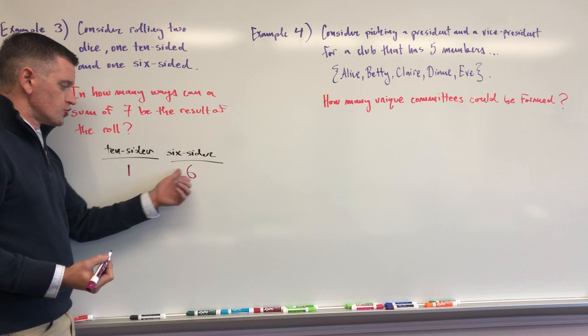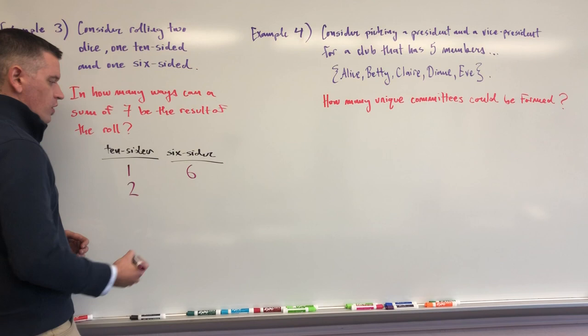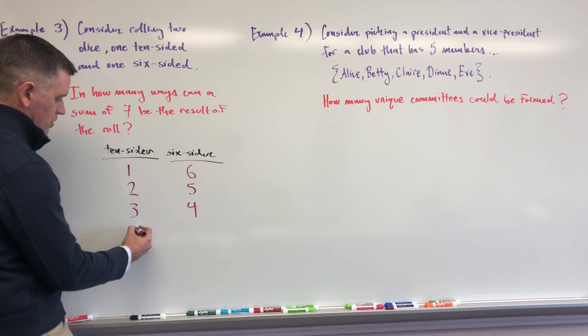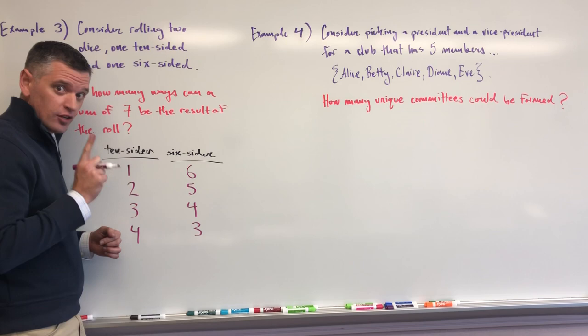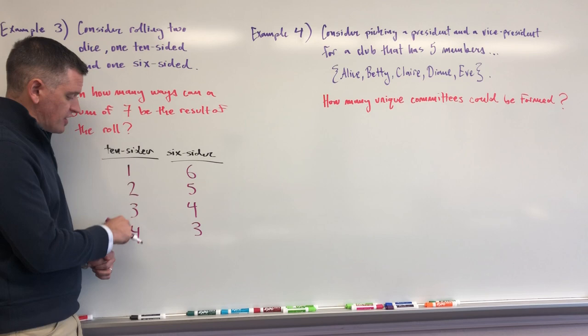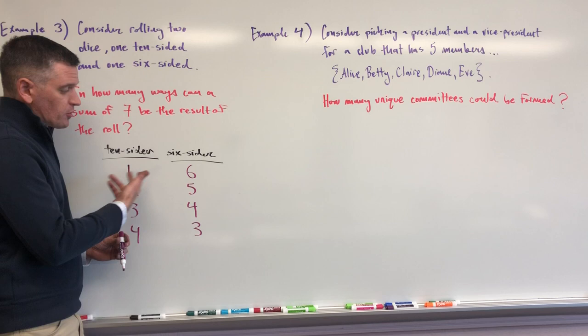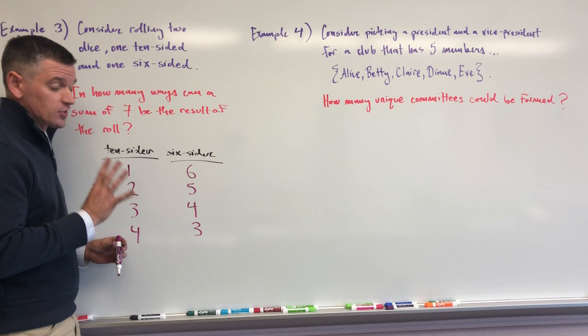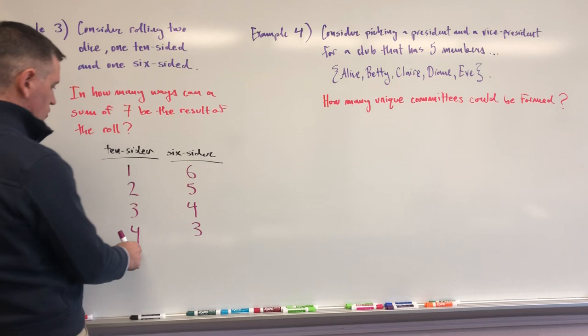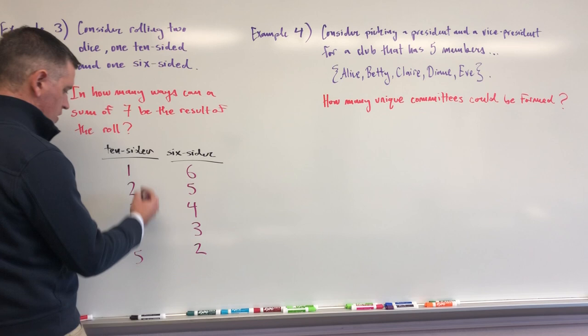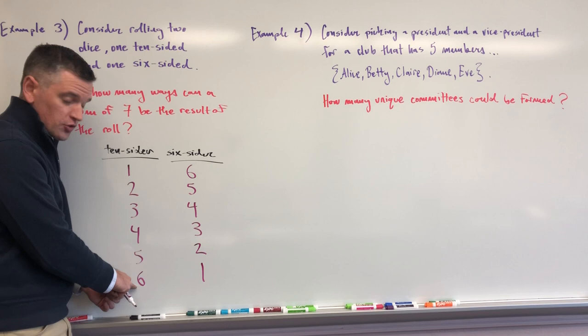Another: if I got a two, I need a five. Three, then I need a four. Four, then I need a three. And let's talk for just a second — three-four on the ten-sider and six-sider respectively is a different and unique outcome than four-three. This is me getting a three on the ten-sider versus a four on the ten-sider. These are unique outcomes. If it helps, think of them as different colored dice — eventually on the combinatorics worksheet you'll be rolling three dice, so keep that in mind. So we've got four-three, then five-two.